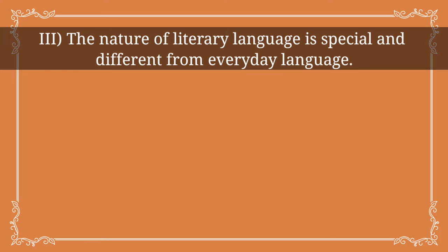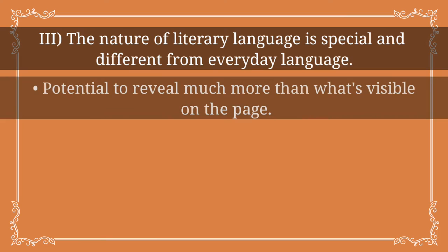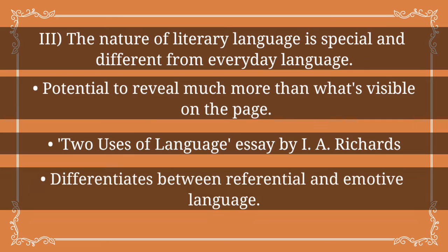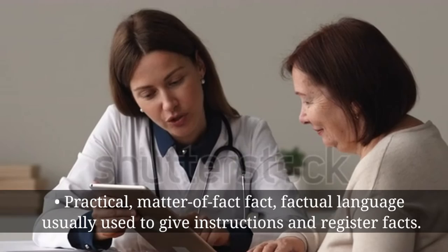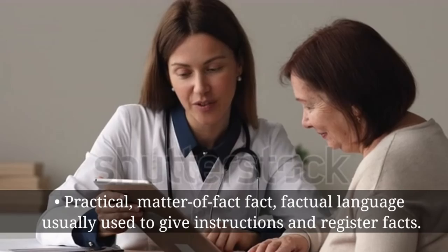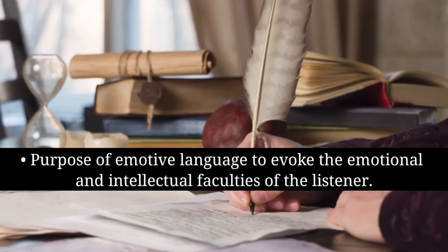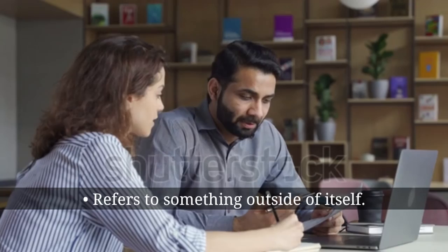The New Critics argued that the language of a literary text is special and has the potential to reveal much more than we see on the page. Language, they believed, can be used in two main ways, as highlighted by I.A. Richards' 'two uses of language,' which distinguishes between referential and emotive language. Referential language, or non-literary language, is the practical, matter-of-fact kind used in everyday life and to record historical and scientific facts. Emotive language has a purpose to evoke the emotional and intellectual faculties of the reader or listener.